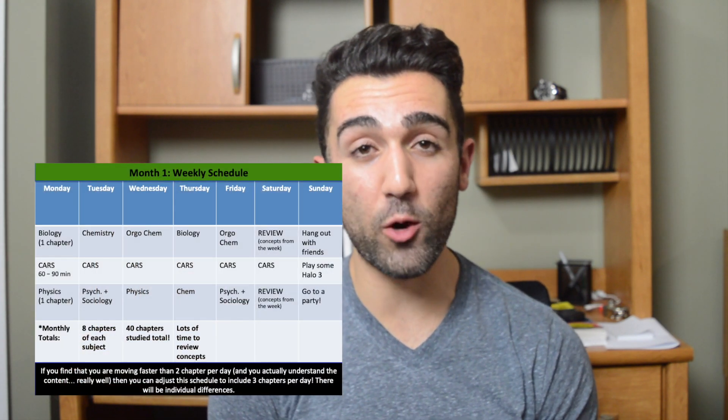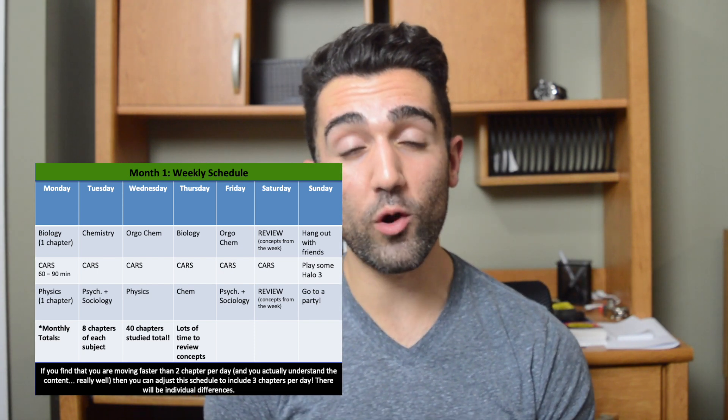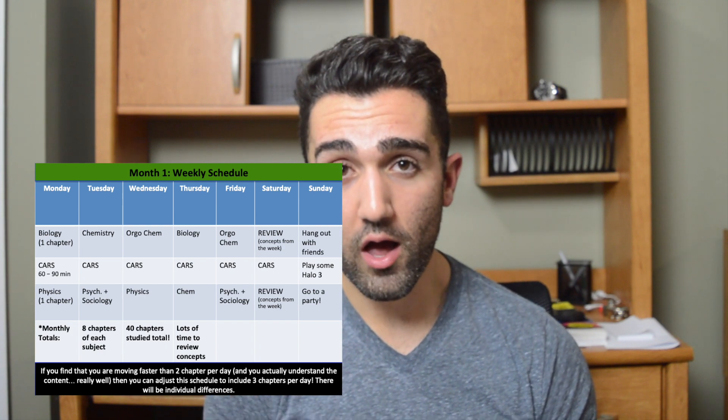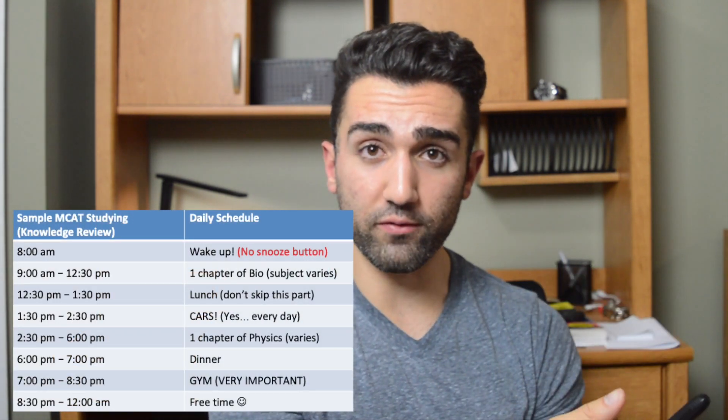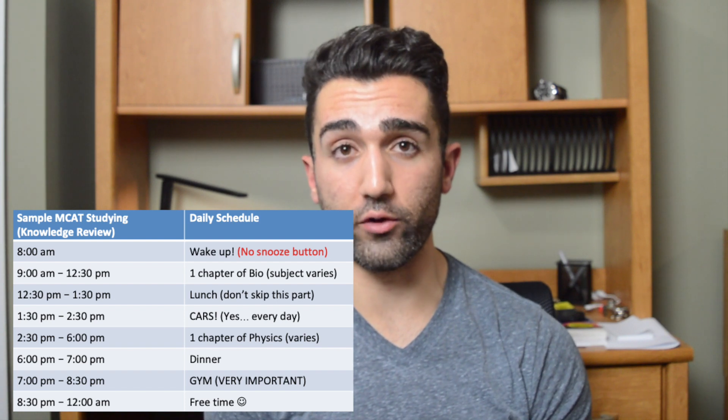Now that we've gathered all our preliminary materials, we move on to month one. In this first month we're focusing exclusively on knowledge review — learning the material. You're going to be studying six days a week for about eight hours a day. Every single day you do one chapter of one subject and one chapter of a different subject — not two chapters of chemistry, for example, but one chapter of chemistry and one of biology. On top of that, you're doing one hour to about 90 minutes of CARS review every single day.